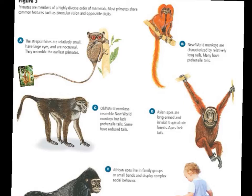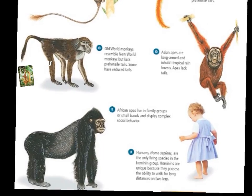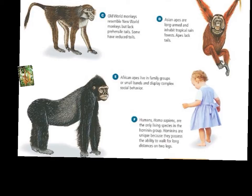The Asian apes have long arms and live in rainforests — the orangutan is a good example, with extremely long arms, living up in the trees. An important distinction: apes lack a tail, whereas monkeys have a tail. People often use those terms interchangeably, but that simply isn't correct. The African apes usually live in family groups and have extremely complex social behavior, with complex brains allowing them to interpret facial features and social cues. Gorillas are a very good example.